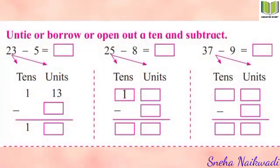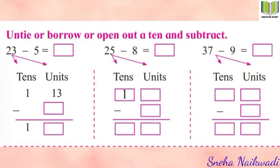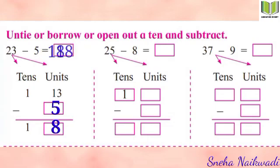Now let's practice. First question: 23 minus 5. There are two tens, so we untie one ten. We write 1 on the tens place and the untied 10 goes towards the 3 units, making 13 units. Now 13 minus 5 equals 8, and 1 ten remains. So 23 minus 5 equals 18.